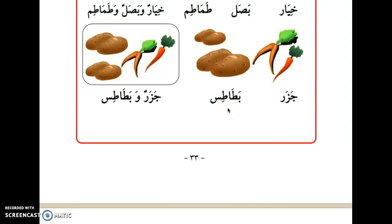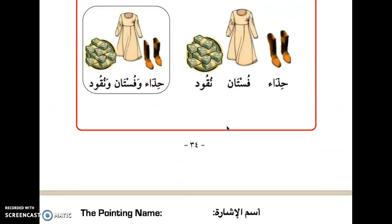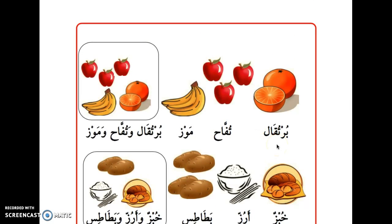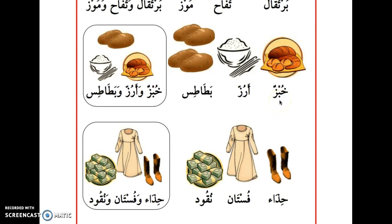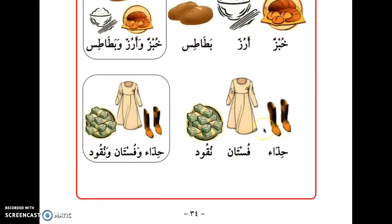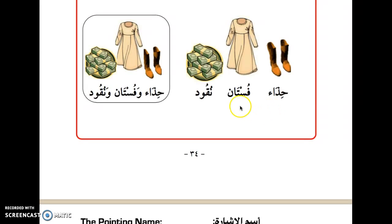Continuing: جزر (carrots), بطاطس (potatoes): جزر وبطاطس — carrots and potatoes. Then: برتقال (orange), تفاح (apple), موز (banana): برتقال وتفاح وموز — orange and apple and banana. And: خبز (bread), أرز (rice), بطاطس (potatoes): خبز وأرز وبطاطس — bread and rice and potatoes. And: حذاء (shoe), فستان (dress), نقود (currency): حذاء وفستان ونقود.